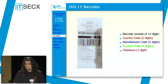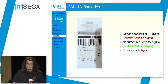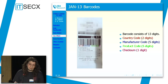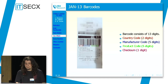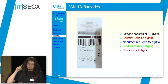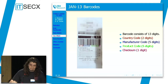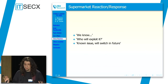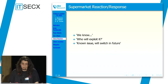After knowing this, we talked to the manufacturer of those machines, who informed us that the machines do have a way to create secure receipts. However, their customer has to agree to that — and apparently the supermarket said no. Then we informed the supermarket, and we got one of the best answers in incident disclosure: 'We know who will exploit it. We will do it in the future. We will switch to a safe system,' which is fine with me.